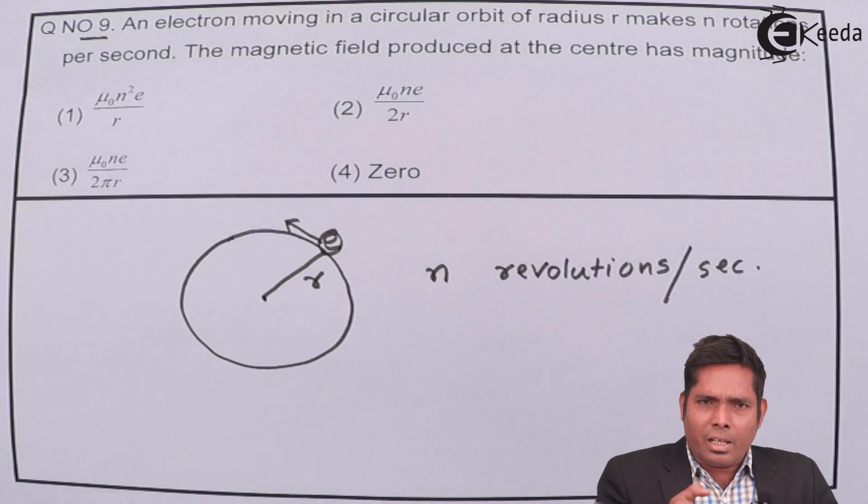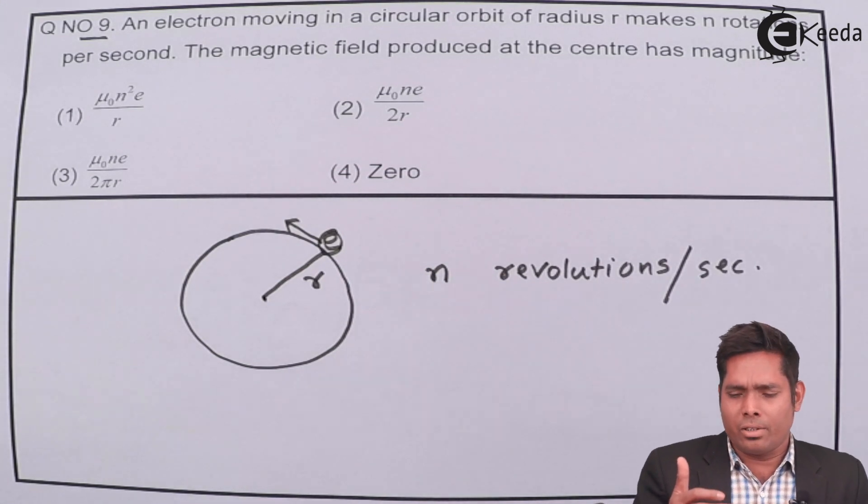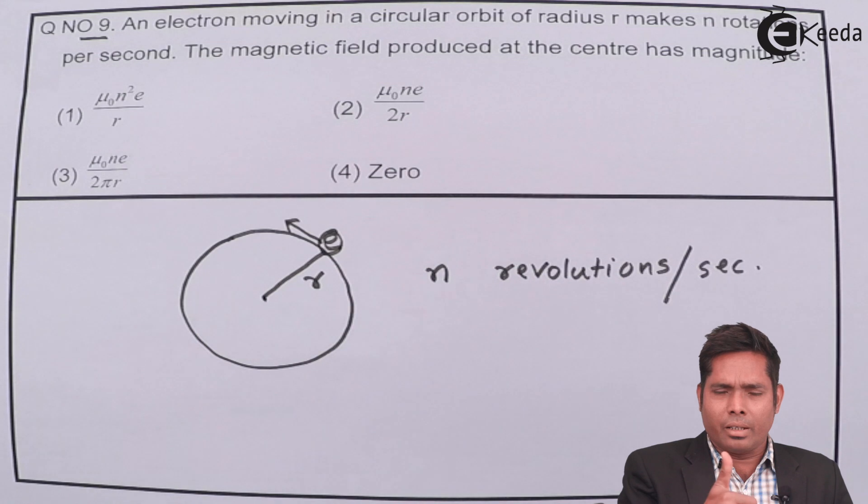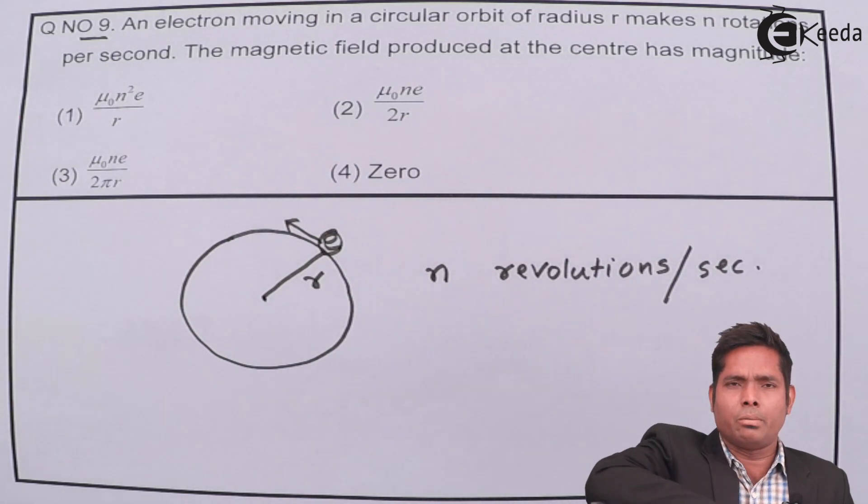If current is in this sense, I will put my fingers in the sense of the motion of the current. So, if the current is anticlockwise, then at the centre, the magnetic field will be up. If the current is clockwise, the magnetic field will be down.